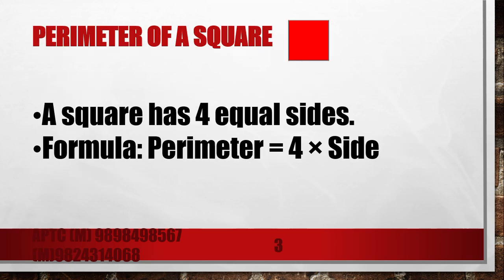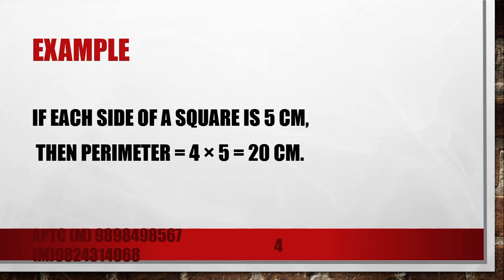A square has four equal sides. Formula is very simple. Perimeter = 4 × side. Let's try an example. If each side is 5 cm, then 4 × 5 = 20 cm.